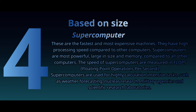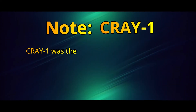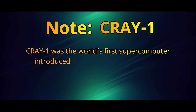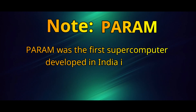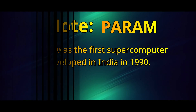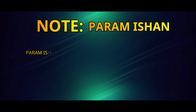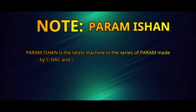Supercomputers are used for tasks such as weather forecasting, nuclear research, military agencies, and scientific research laboratories. Cray-1 was the world's first supercomputer, introduced by Seymour R. Cray in 1976. Param was the first supercomputer developed in India in 1990. Param-e-Shane is the latest machine in the Param series, made by C-DAC and IIT Guwahati on the 20th of September 2016.